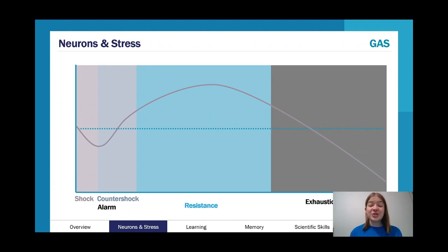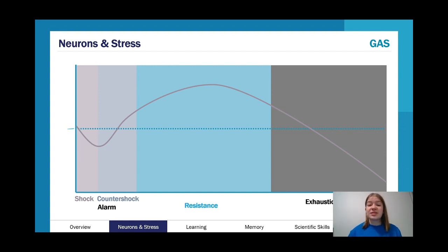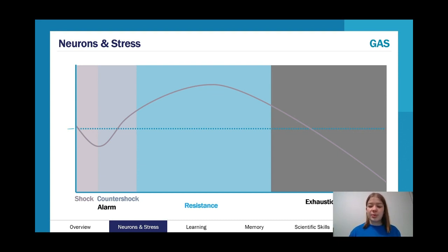The HPA axis takes longer than the fight-or-flight-or-freeze response to activate, but its effects last longer. Think of adrenaline for acute stress and cortisol for chronic, longer-term stress. Make sure you know the General Adaptation Syndrome by Hans Selye: baseline resistance drops in shock, rises in counter-shock as stress hormones are released, stays high in resistance, then crashes below normal in exhaustion. Towards the end of resistance you see minor illnesses, and exhaustion is where serious conditions like heart disease can appear.